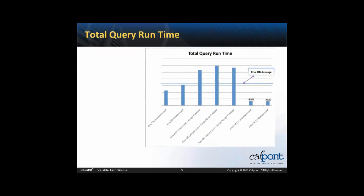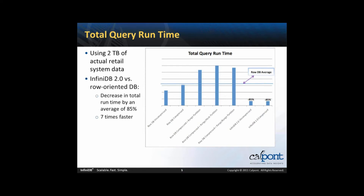For the total query run time, I captured from a real live two-terabyte retail system — used primarily for data warehousing and ad hoc reporting — about a half hour's worth of activity, meaning all the queries necessary to generate all the reports. InfiniDB 2.0 versus the row-oriented database showed about an 85% decrease in total run time — that's seven times faster. This was also a 41% improvement over prior versions of InfiniDB from the same analysis performed in January 2010, representing a huge improvement in the optimizer and database engine.